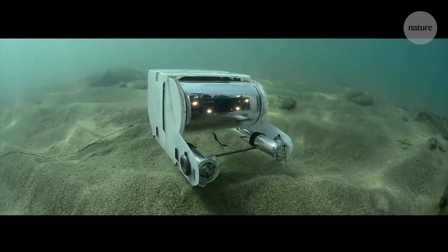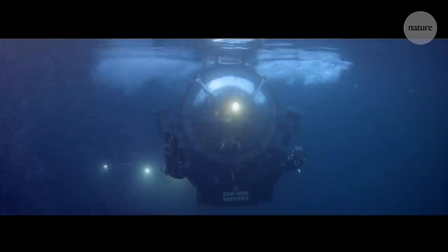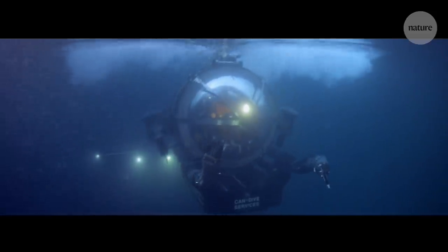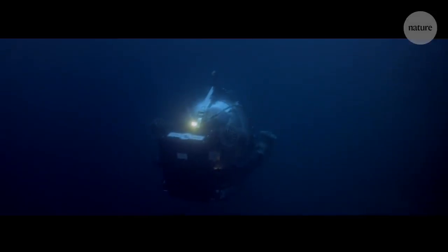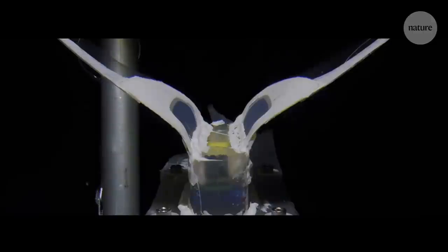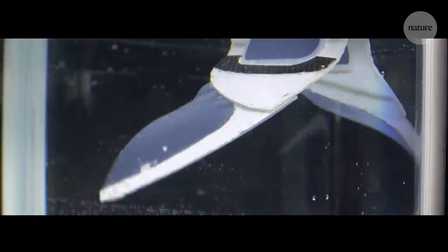Most deep sea machines cope using super strong rigid materials or pressure compensation systems, but these approaches can be bulky and heavy, and if they fail, it can be catastrophic. The researchers argue that a soft robot could be a promising alternative. Flexible materials could shift and squish rather than break under the pressure, with a lower risk of massive failure.